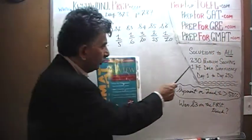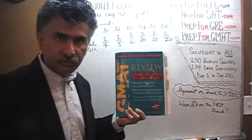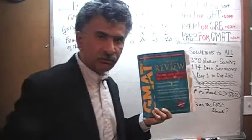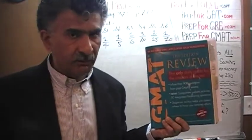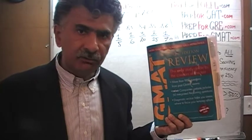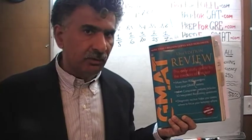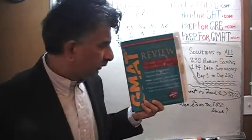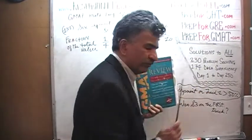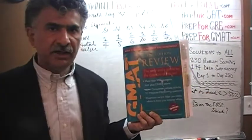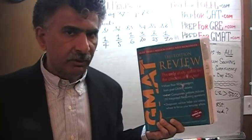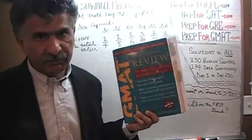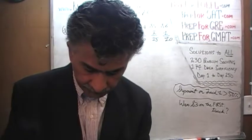The book contains 230 problem solving questions and 174 data sufficiency questions. We have already solved every single math problem from this book. If you are interested in watching any of the original solutions to the problems, you will find the original solutions from day number one. Right now, we are in the process of redoing the problems and we are on page number 287. Please turn to it.